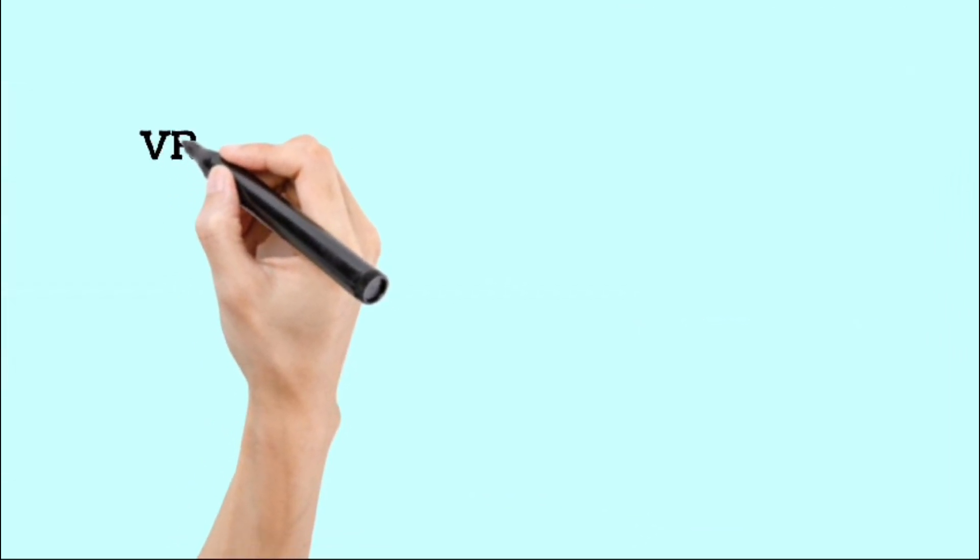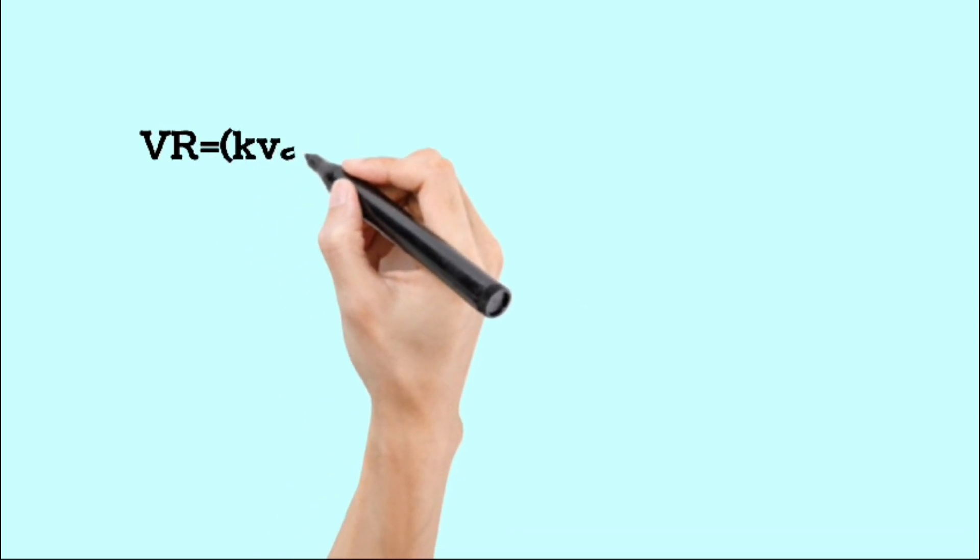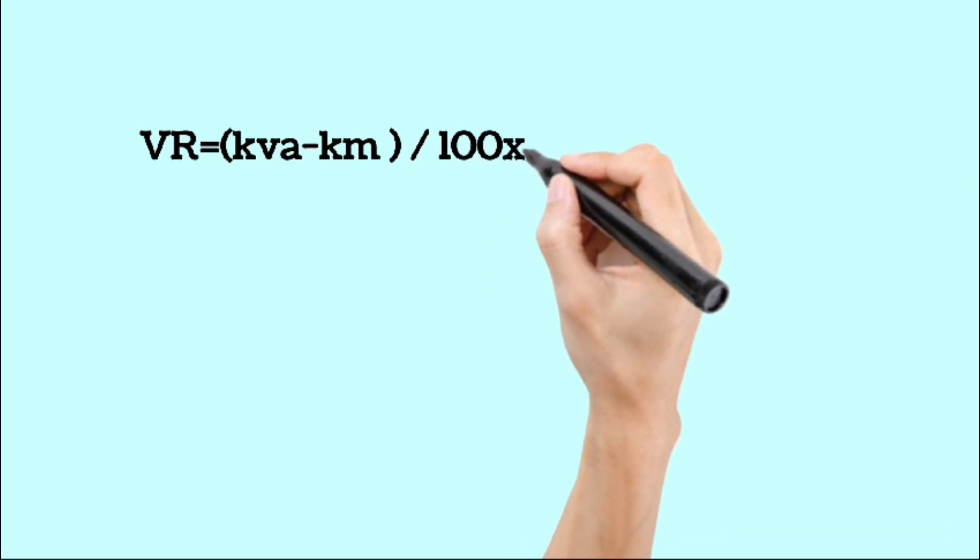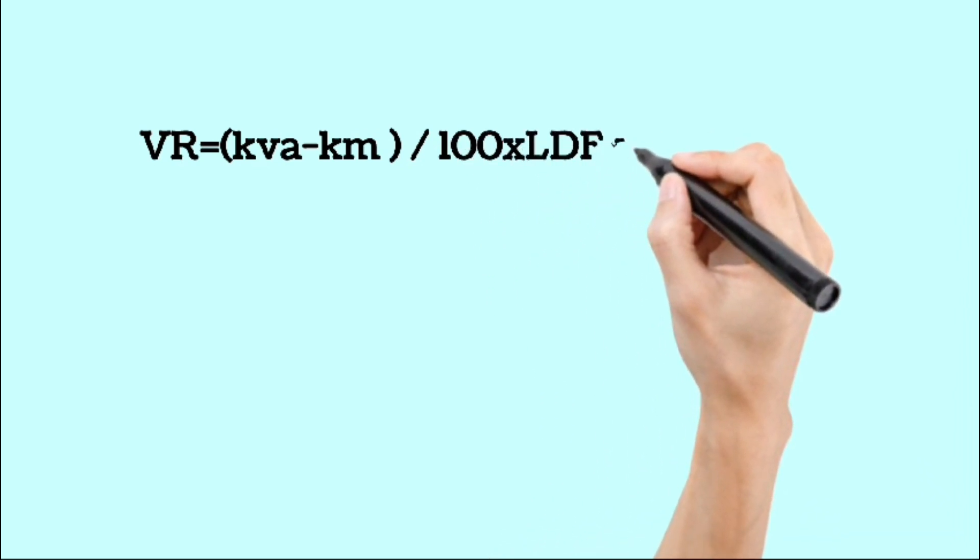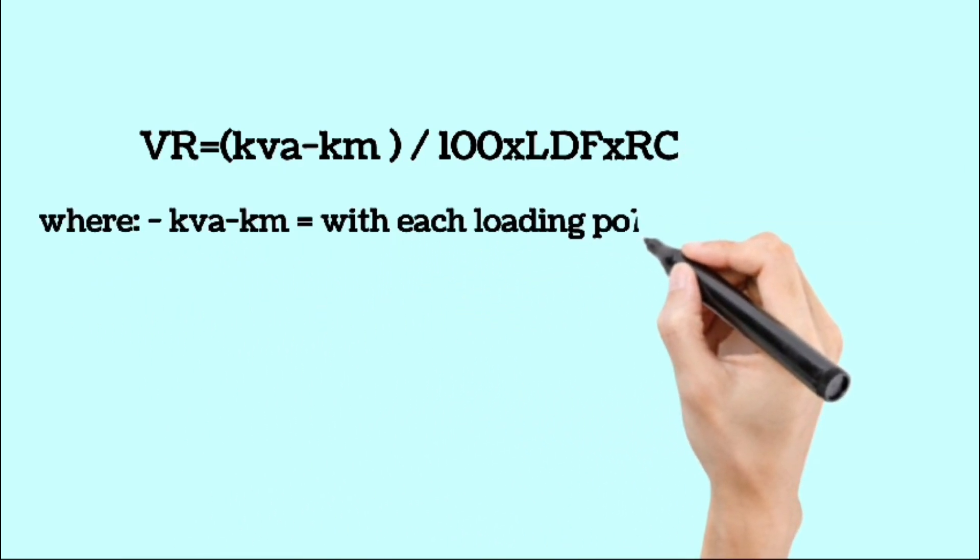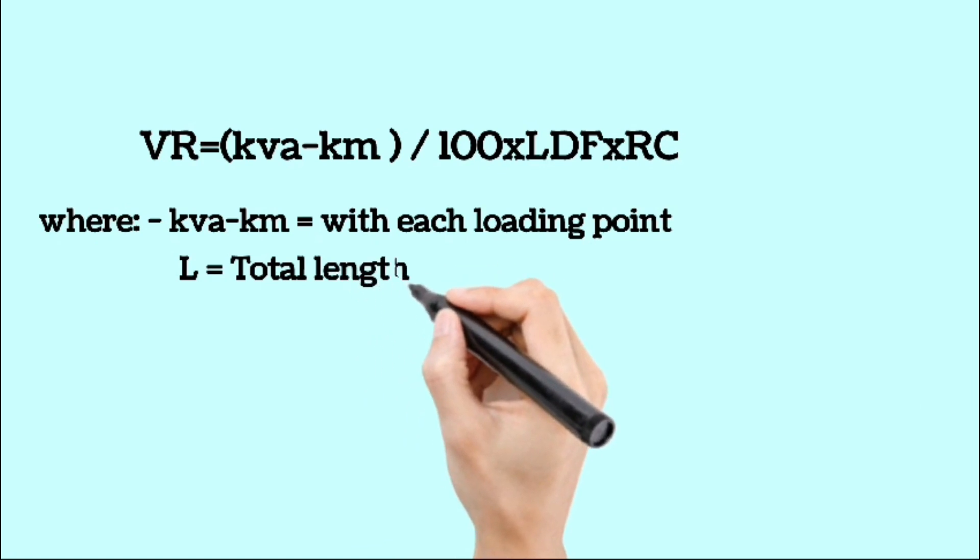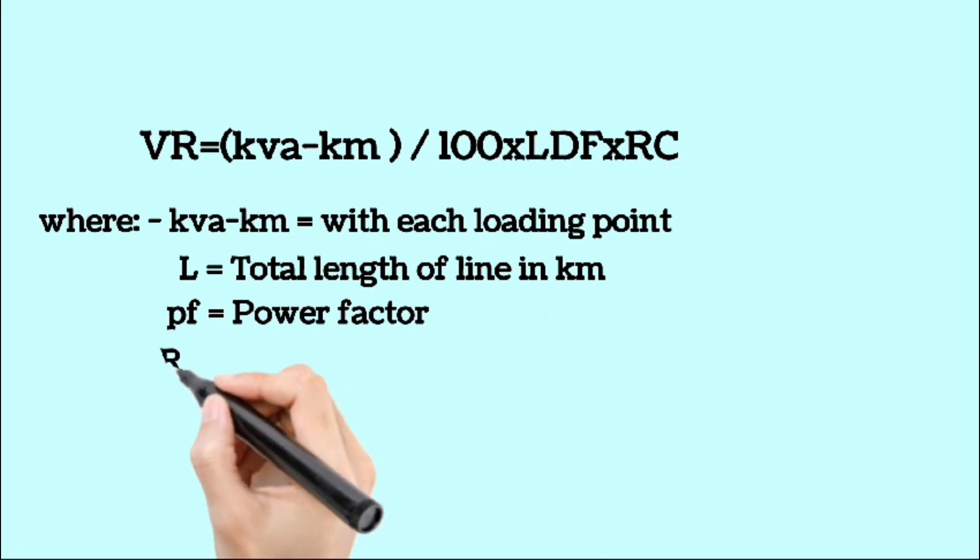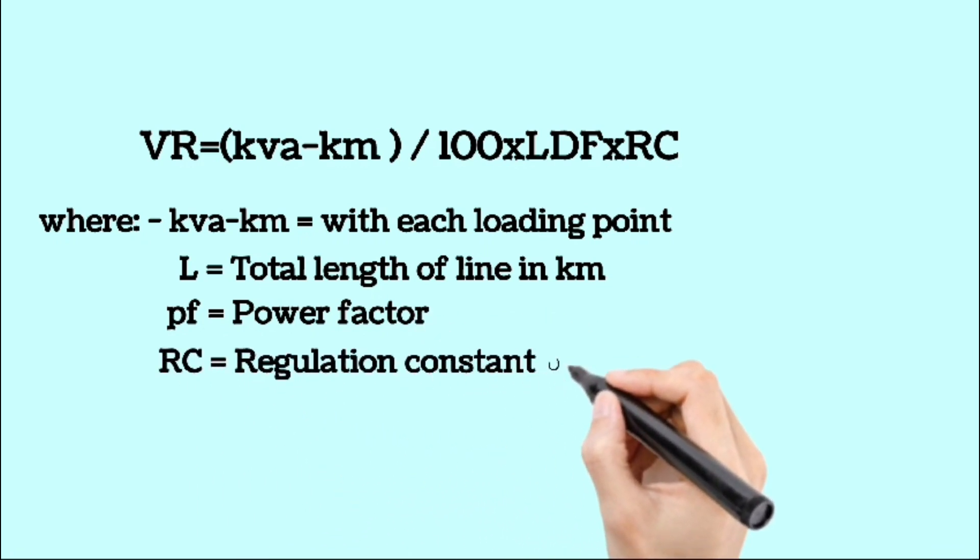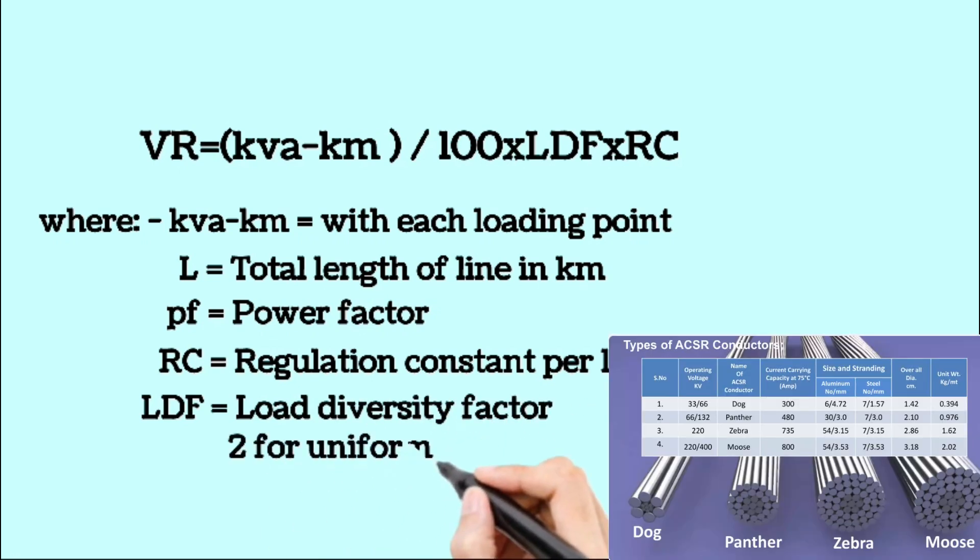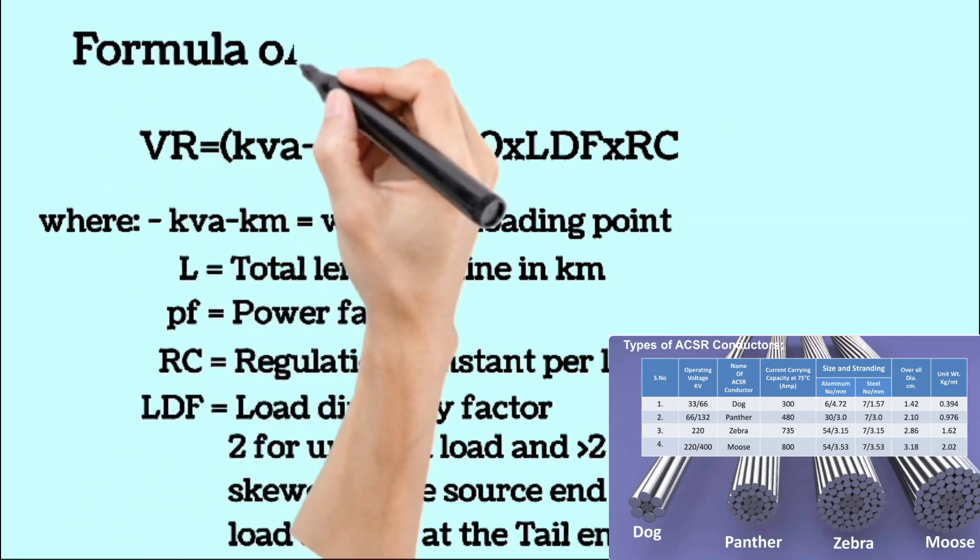Now let's look at the voltage regulation formula. Remember this for future reference: voltage regulation equals kVA kilometer divided by the product of 100 and load diversity factor and regulation constant. Here we will explain each abbreviation one by one. Feel free to take a screenshot for better understanding and reference. Please note that the regulation constant depends on the current carrying capacity of the conductor and the length of the line. It is always measured per 100 kVA kilometer.